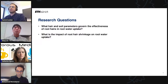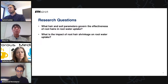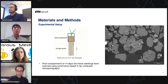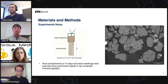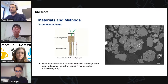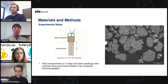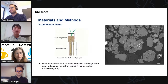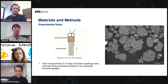We are asking: what hair and soil parameters are governing the effectiveness of root hairs in root water uptake? And additionally, what is the impact of root hair shrinkage on root water uptake? To address these questions, we used synchrotron-based X-ray CT and an experimental setup consisting of a seed compartment in the upper part and several plastic tubes in the lower part. The whole system was filled with a loamy soil and we planted one maize seedling within each experimental setup. After some time, some roots find their way from the seed compartment down into these tubes. After 14 days of growth, we disconnect the tubes and scan them individually within the synchrotron facility.